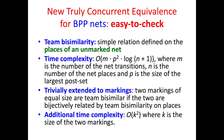Team bisimilarity is not only easy to define but also easy to check. Its time complexity is the lowest ever defined over the places of a BPP net. It is trivially extended to markings. Two markings are team bisimilar if they are bijectively related by team bisimilarity on places, with an additional time complexity of O(k²), where k is the size of the two markings.